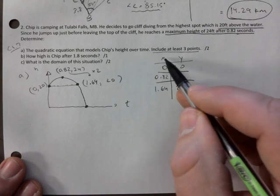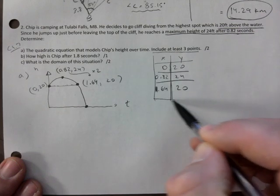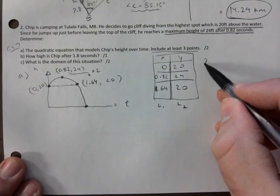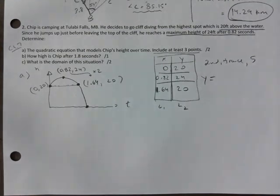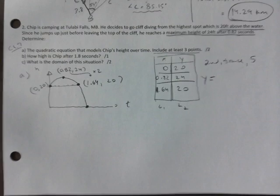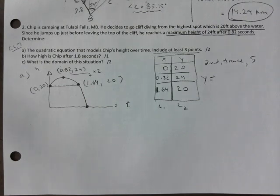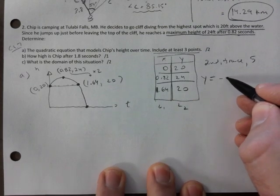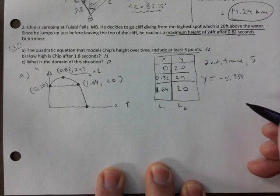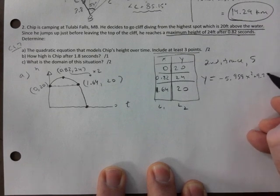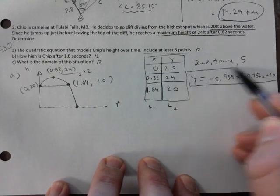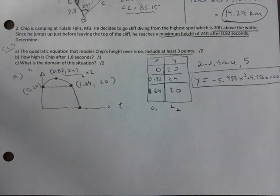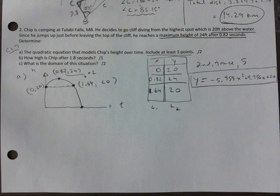You put this in L1, L2. Show work. Second trace. 5. You come up with negative 5.959 X squared plus 9.756 X plus 20. This is what I'm after there. That would be the equation that models this scenario.